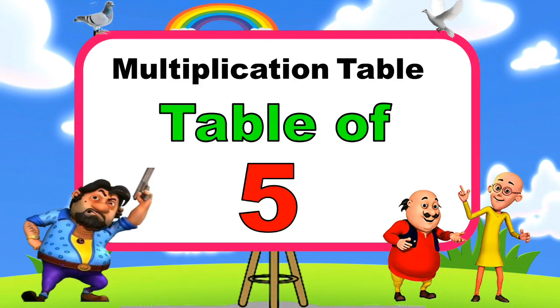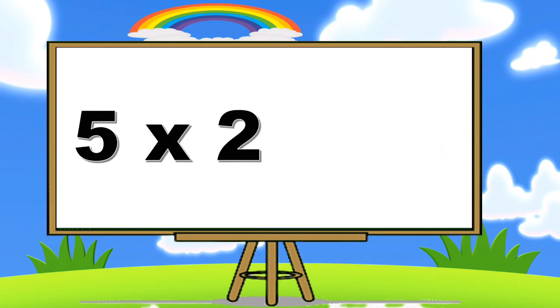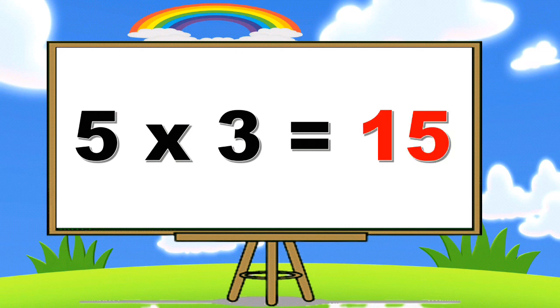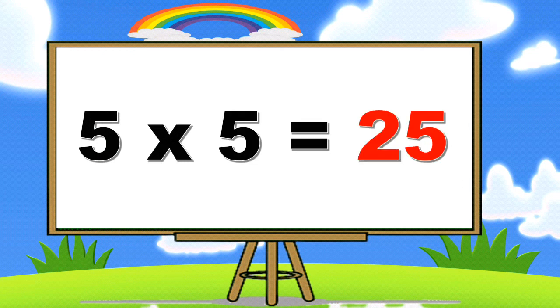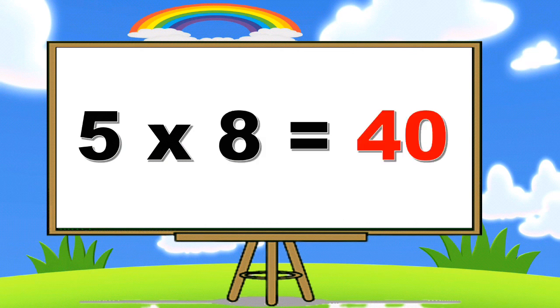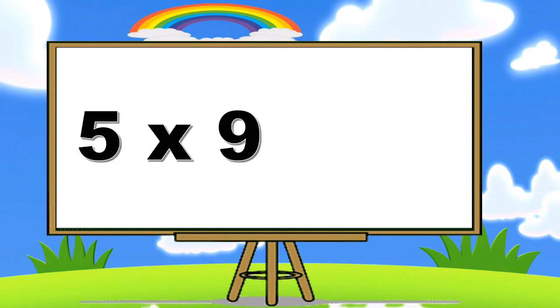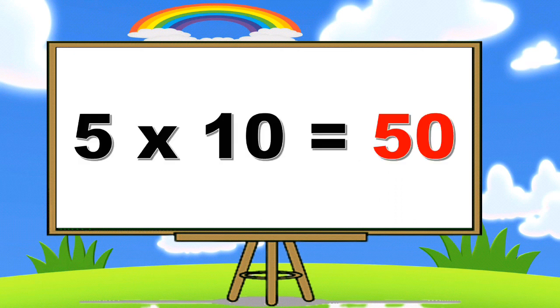Table of five. Five ones are five. Five twos are ten. Five threes are fifteen. Five fours are twenty. Five fives are twenty-five. Five sixes are thirty. Five sevens are thirty-five. Five eights are forty. Five nines are forty-five. Five tens are fifty.